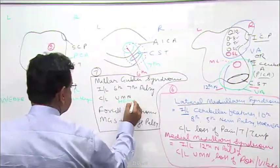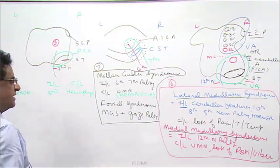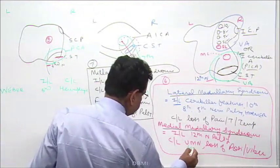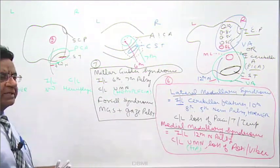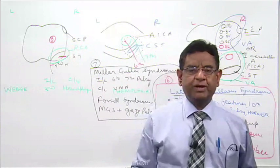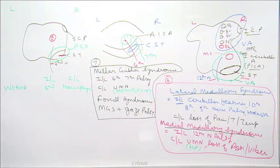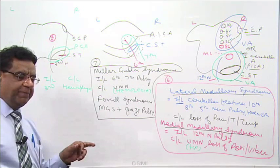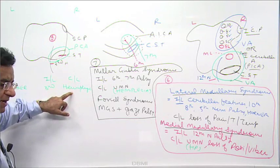Ipsilateral third nerve palsy with contralateral hemiplegia — upper motor neuron features are the same as hemiplegia. So Weber syndrome: ipsilateral third nerve palsy, contralateral hemiplegia.